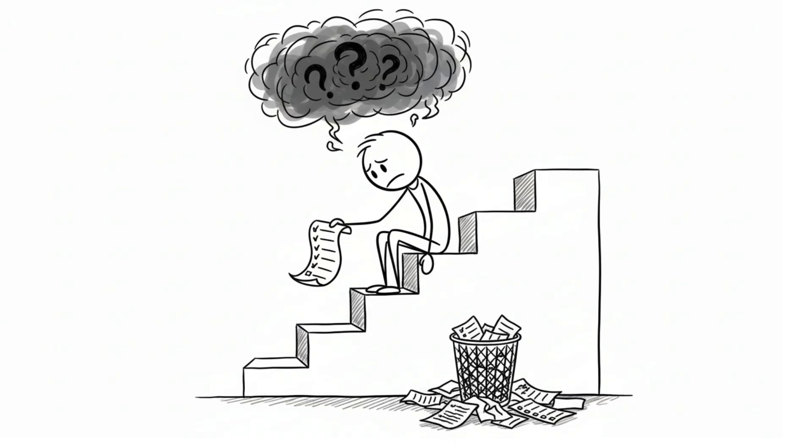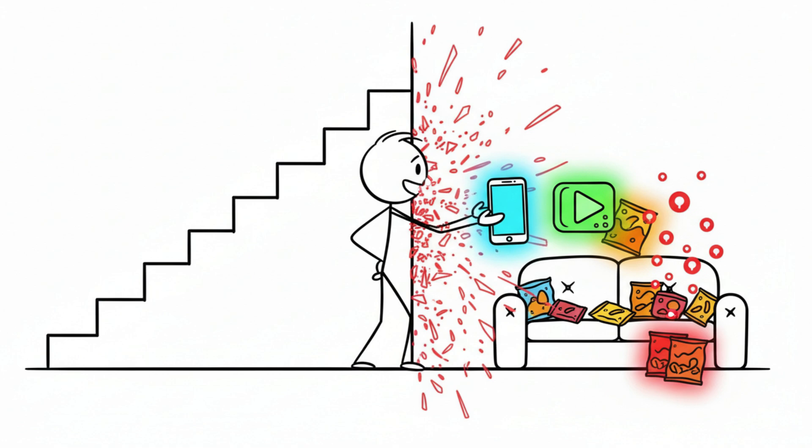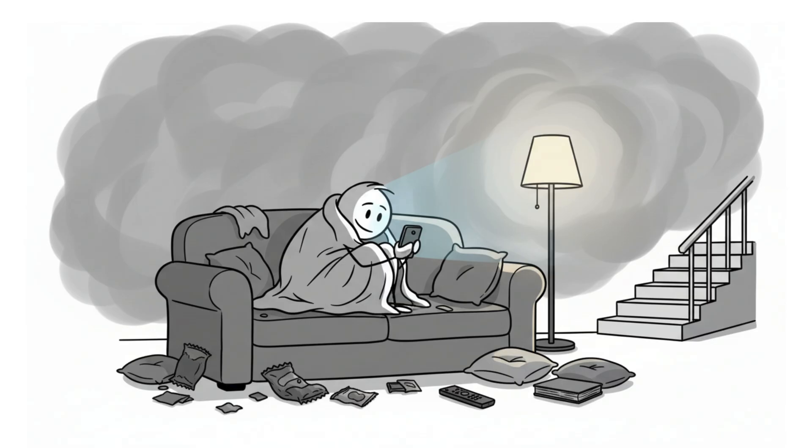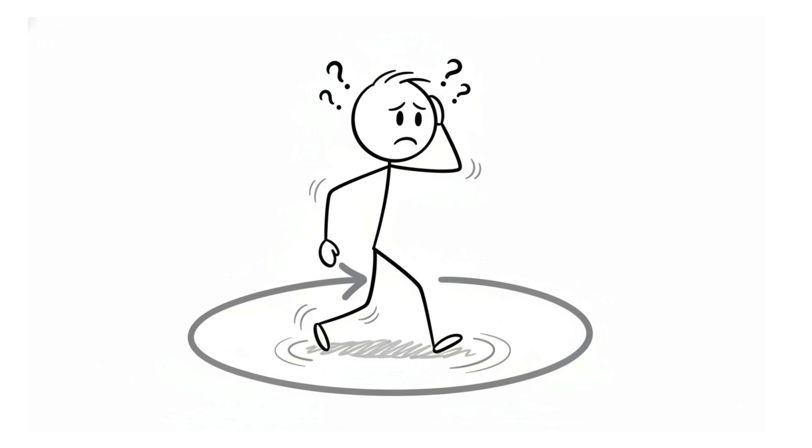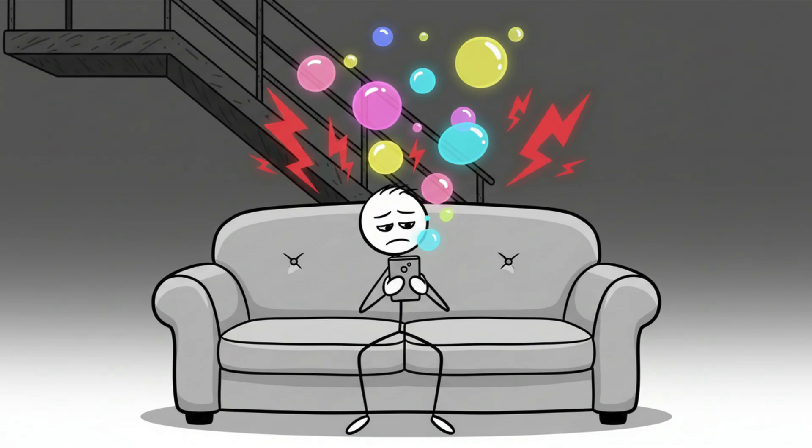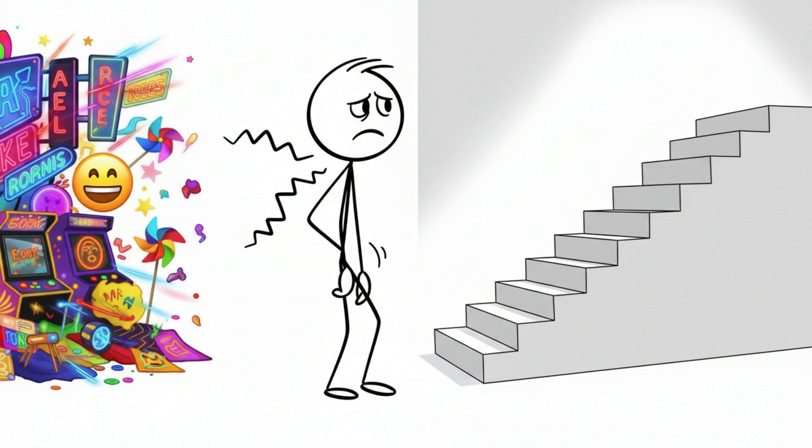Most people never reach it because they quit halfway, chasing easier pleasures that deliver quick hits of dopamine. The brain learns that avoidance feels safer than completion and the cycle repeats. To your brain, it can do easier work but still receive dopamine, so why would it even bother doing the harder but more beneficial task?